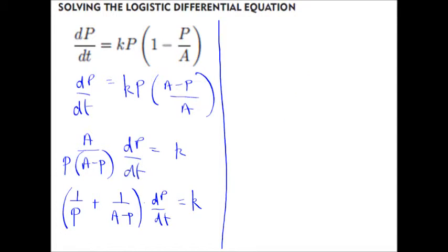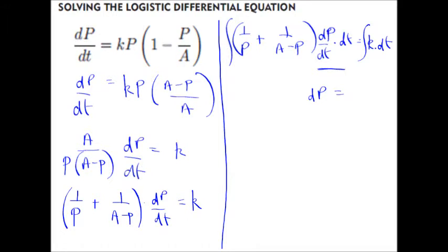Now, we integrate both sides with respect to t. And we know that that expression there will simplify to dP. And the right-hand side, we can integrate that with respect to t. We get kt plus c, and we'll leave the left-hand side alone for the moment.